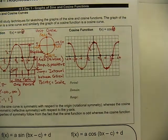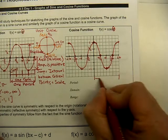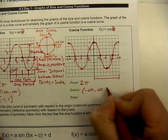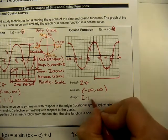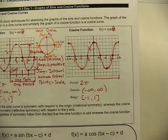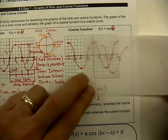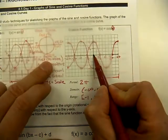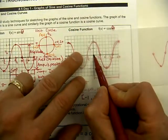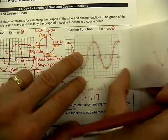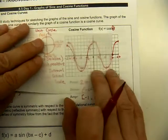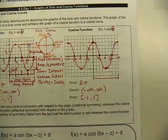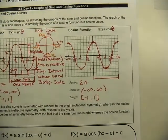The cosine curve has a period of 2π, a domain of all real numbers, and a range from negative one to positive one. Unlike sine, cosine does not have rotational symmetry — instead it has reflection symmetry about the y-axis. Flipping it over the y-axis maps it onto itself, which is the behavior of an even function.